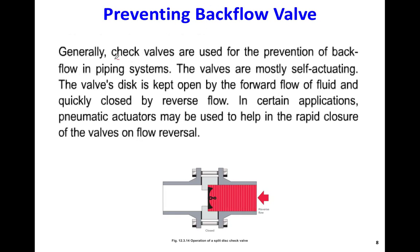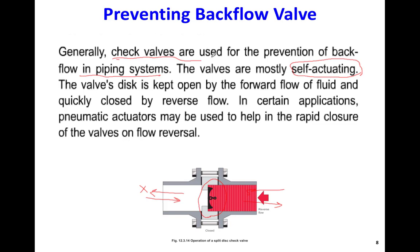A check valve is used to prevent backflow in the piping system. They are self-actuating — meaning they are designed to open and close by themselves depending only on the direction of flow. When the flow is from left to right, it's open; when it's from right to left, it will be closed. It is a self-actuating valve that works by itself and most of the time does not need any external force, energy, or help.